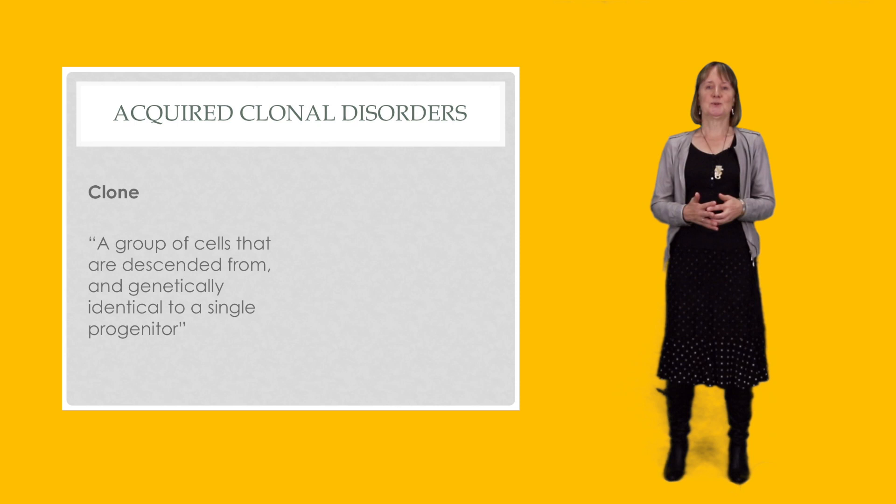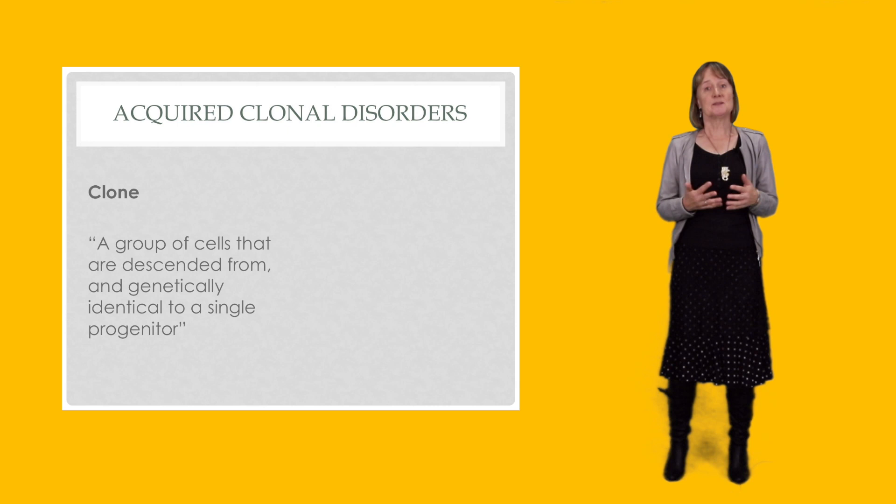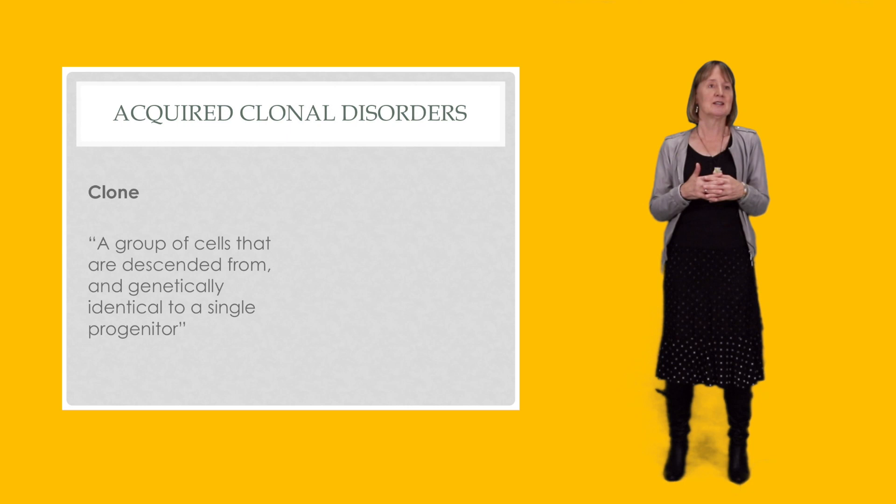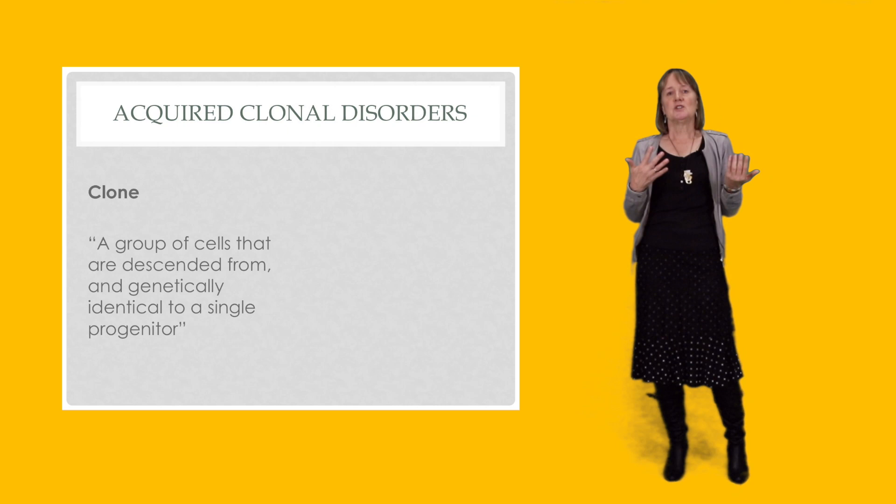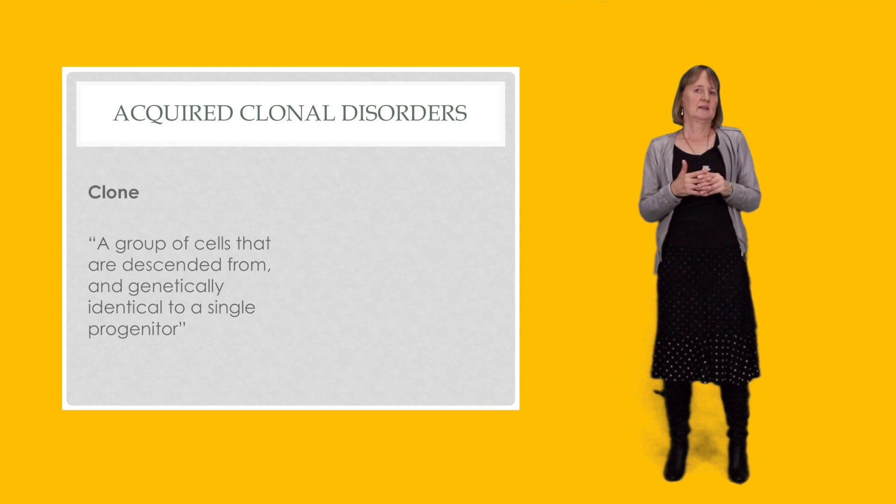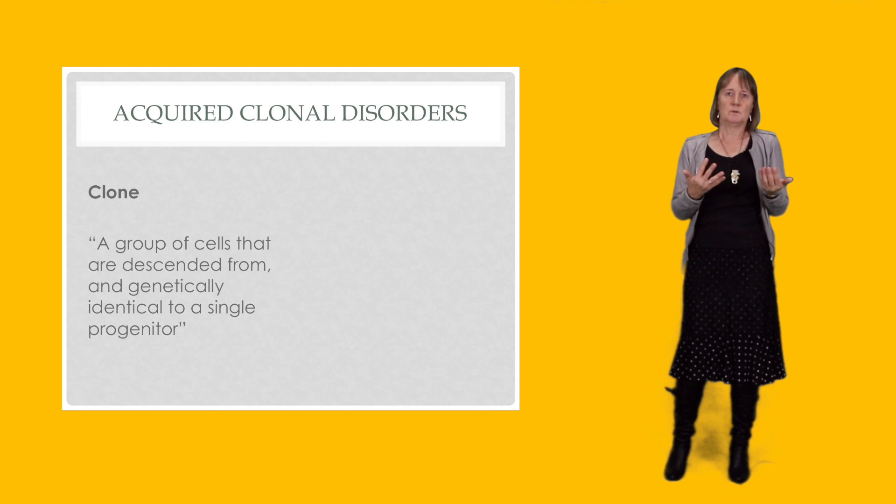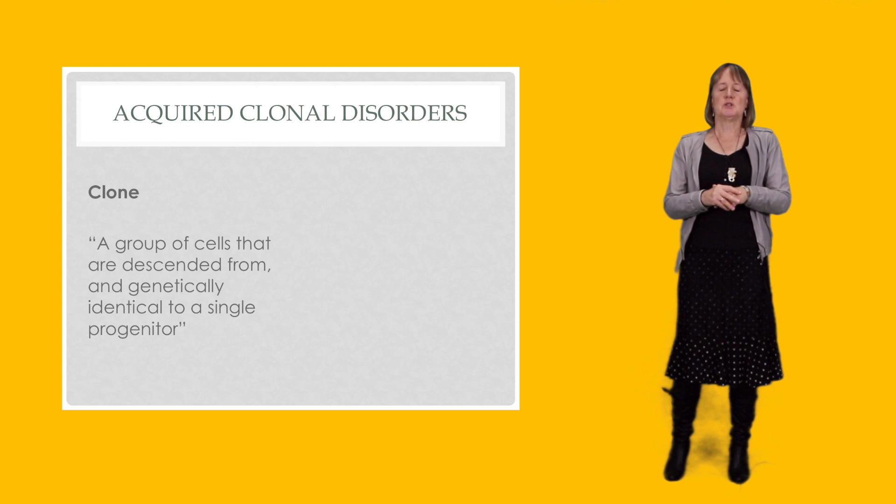The second concept I'd like to talk to you about is clonality, because the hematological malignancies are all acquired and clonal disorders. So you probably know what a clone is, but just to make things clear and to remind everybody that might have forgotten, a clone is a group of cells that is descended from and genetically identical to a single progenitor.